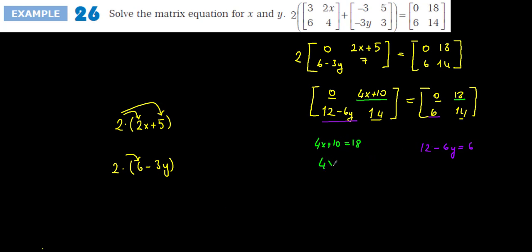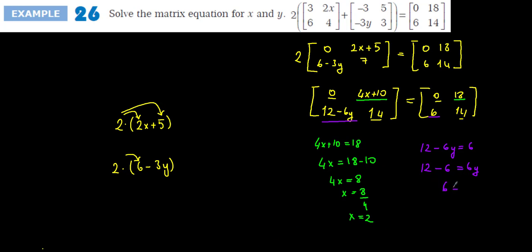Solving 4x + 10 = 18: subtract 10 to get 4x = 8, so x = 8/4 = 2. Solving 12 − 6y = 6: rearranging gives 12 − 6 = 6y, so 6 = 6y, meaning y = 6/6 = 1. Therefore x = 2 and y = 1. That is the answer to this question. Let's move to the next one.